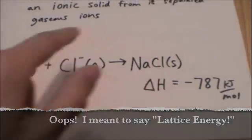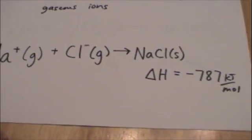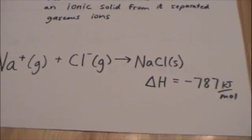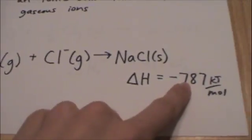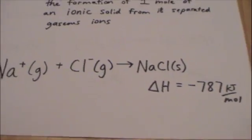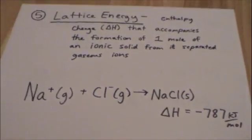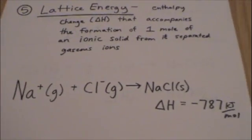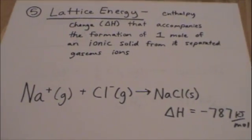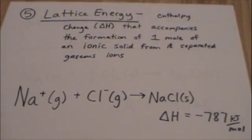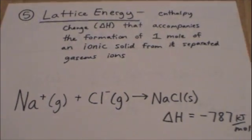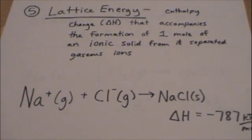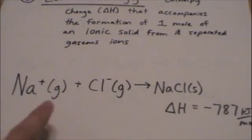The opposite — if you're going from a solid to the gaseous state — so the energy required to break that ionic bond, it would be just positive 787. But lattice energy is defined as the energy change that accompanies the formation of one mole of ionic solid from its separated ions.